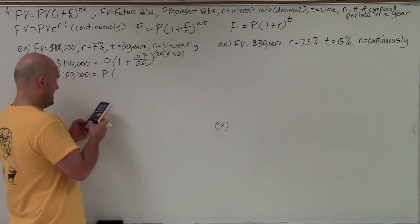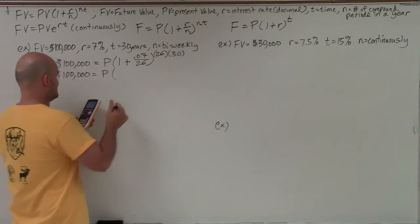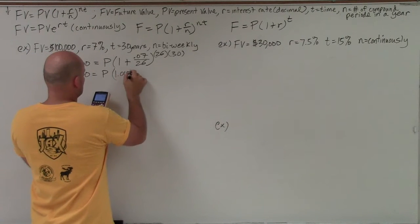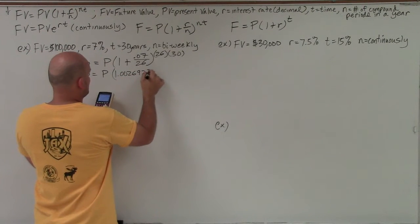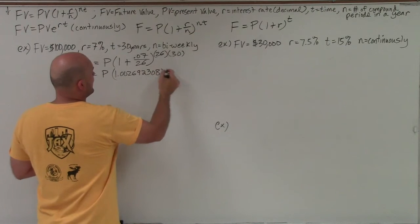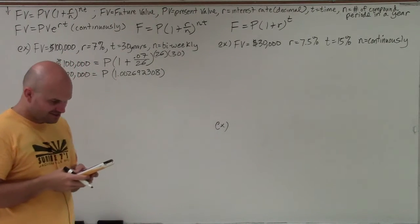And then I'm going to add 1 to that decimal. And I get 1.002692308. And I'm going to raise that to the 26 times 30.